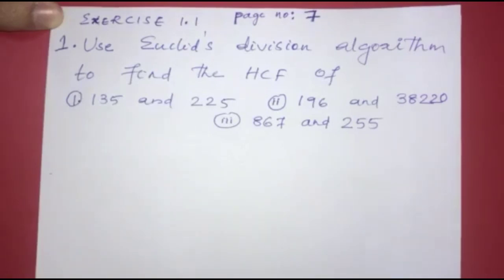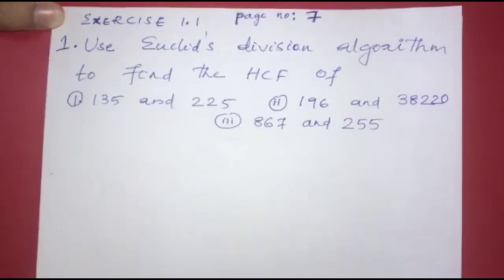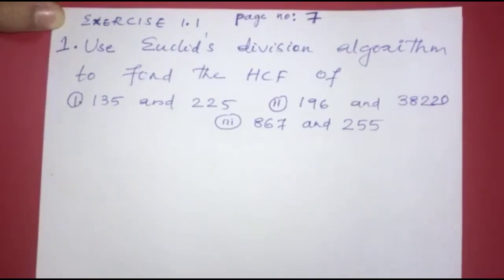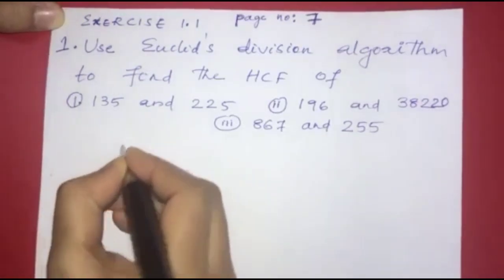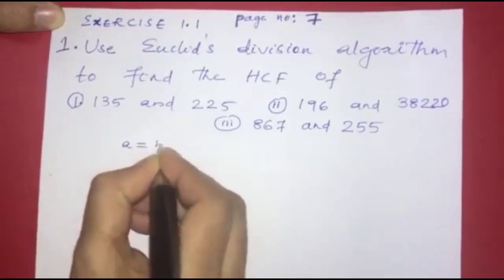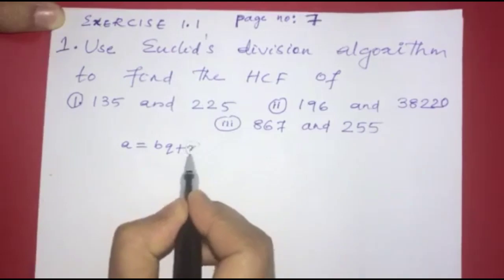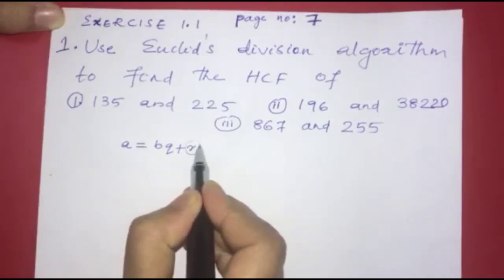In the next class, we have learned about Euclid's division algorithm for two numbers. In this exercise, use Euclid's division algorithm to find the HCF. The formula is A is equal to BQ plus R. We stop the step when the remainder is zero.